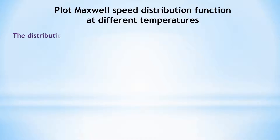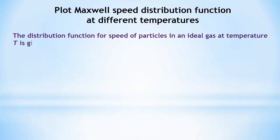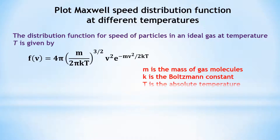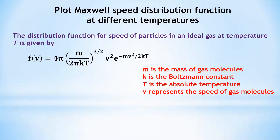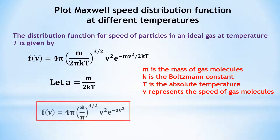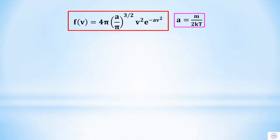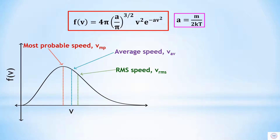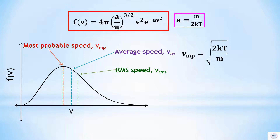The distribution function for speed of particles in an ideal gas at temperature T is given by this expression. Here, m is the mass of gas molecules, k is the Boltzmann constant, T is the absolute temperature, and V represents the speed of gas molecules. Let A equal to m by 2kT, so the distribution function will look like this. Initially it increases, and after a certain point the value of distribution function decreases. The speed at which the distribution function is maximum is called most probable speed, given by vmp equal to square root of 2kT by m.